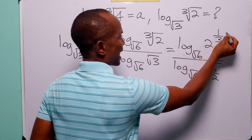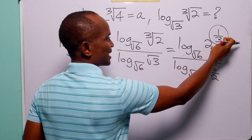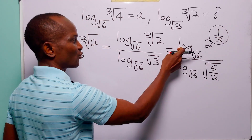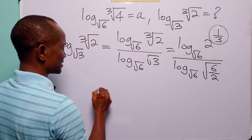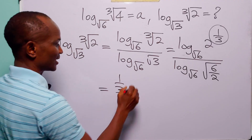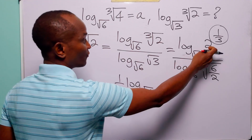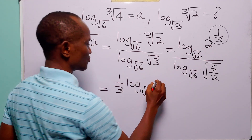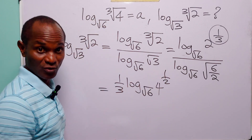The next thing we are going to do is apply the power rule to the numerator — we bring down the exponent 1 over 3 to the front of the log term to become a multiplier. When we do that, this becomes 1 over 3 times log to base root 6 of 2. But instead of writing 2, we are going to write 4 to the power half, because 2 is the square root of 4.